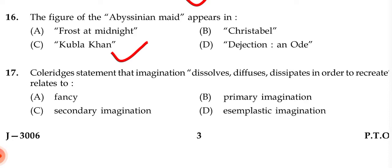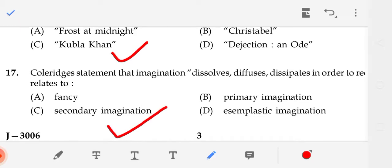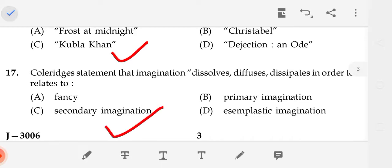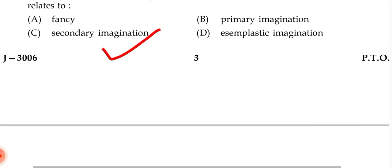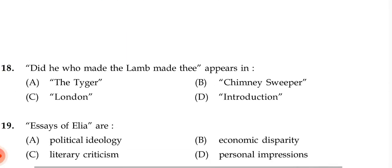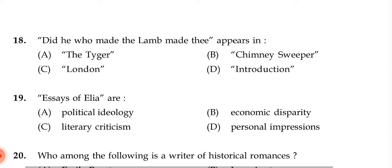Coleridge's statement that imagination dissolves, diffuses, dissipates in order to recreate — it relates to what? The correct answer is C — Secondary Imagination.